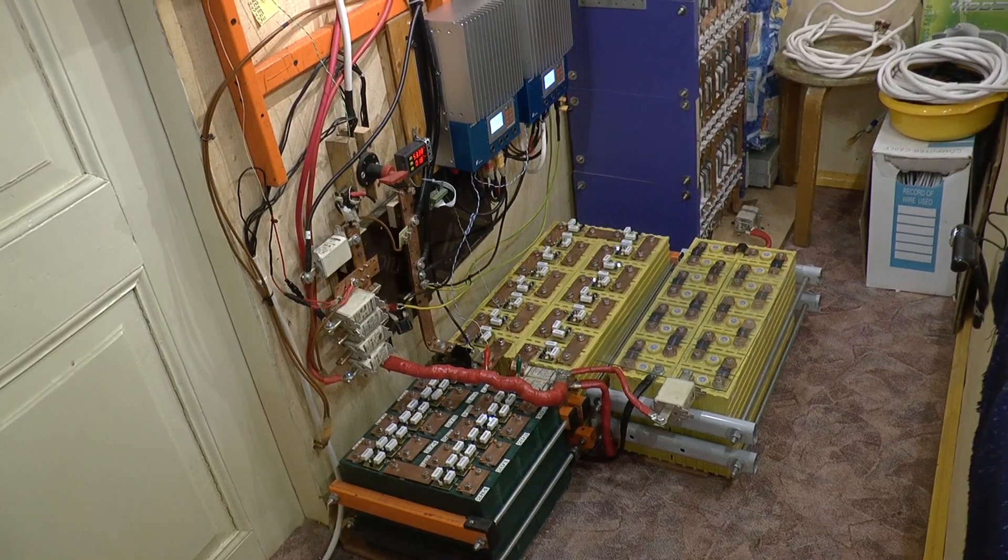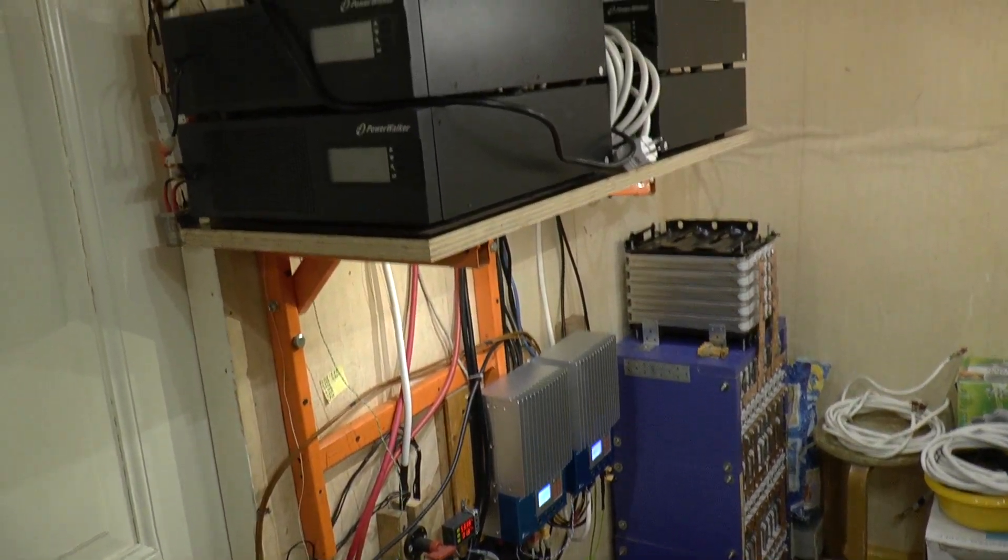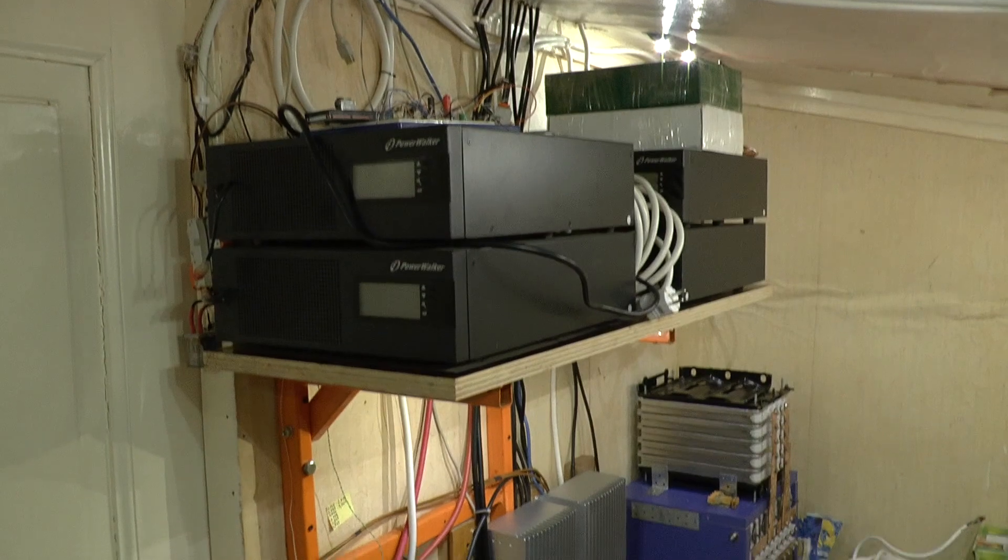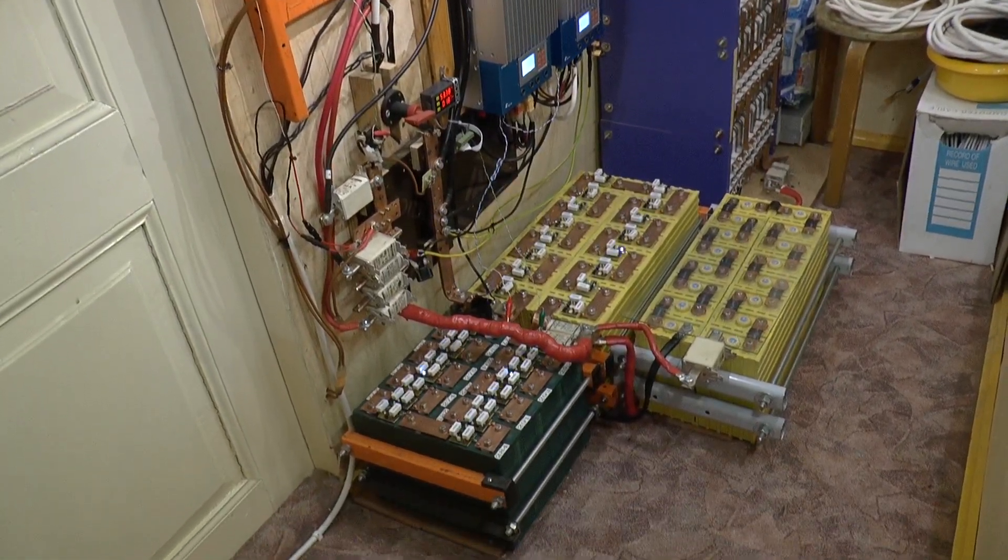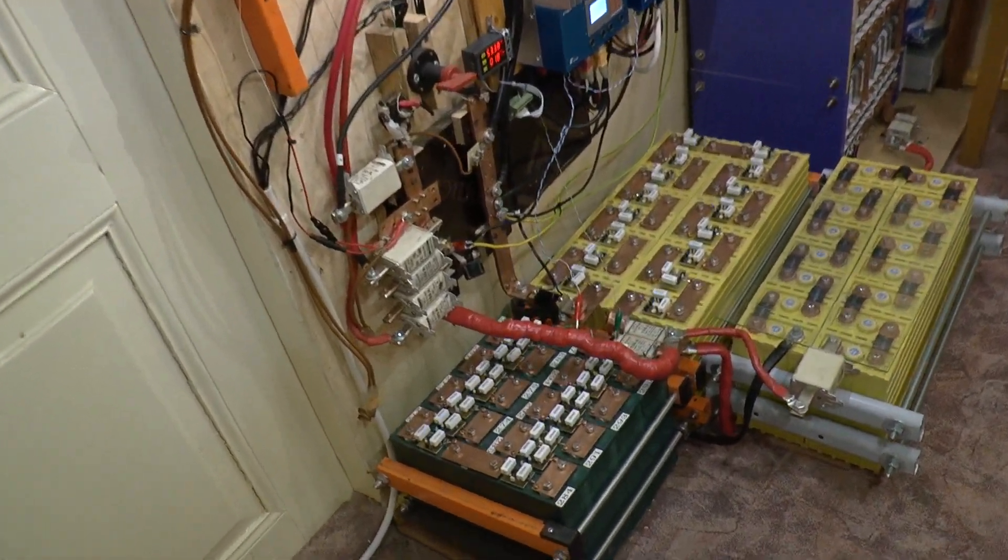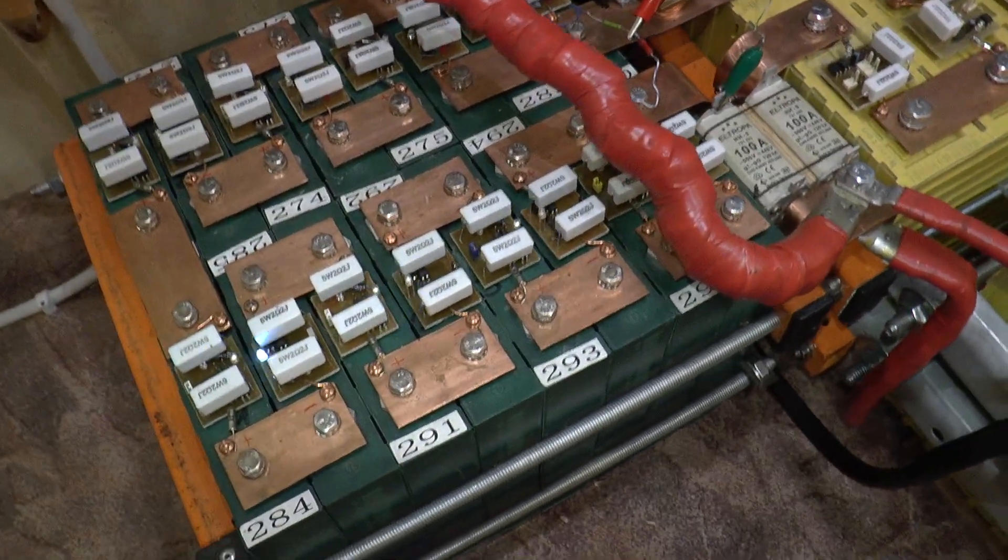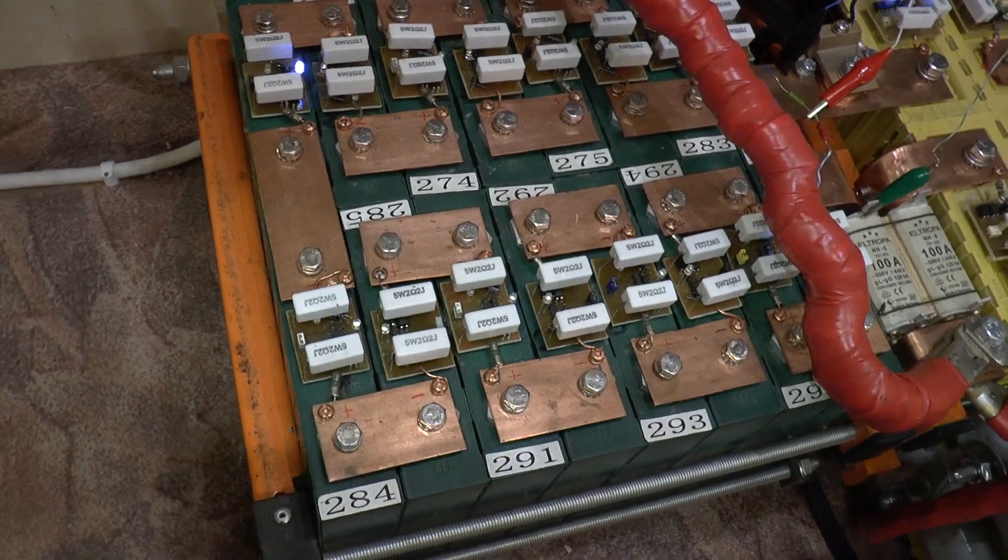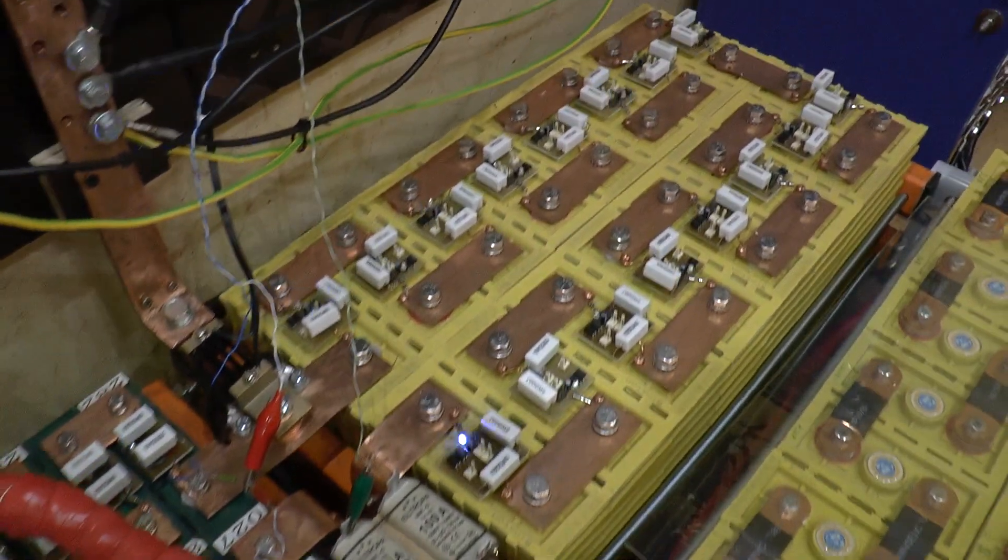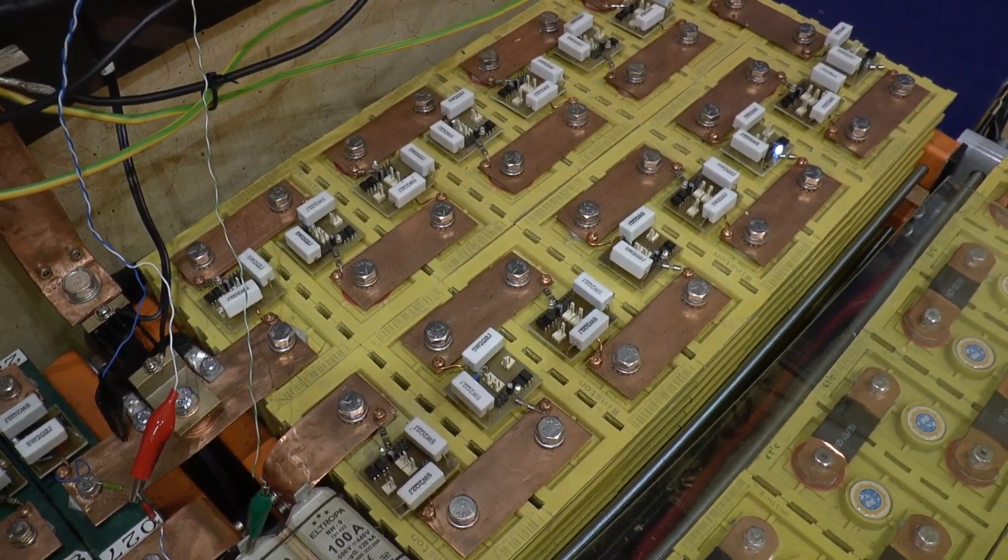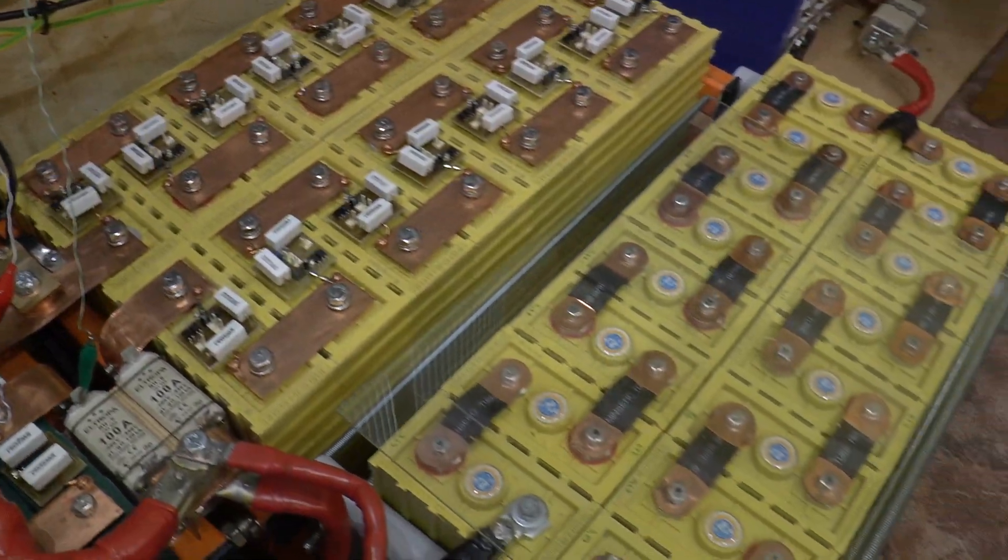So this is my battery setup right now. I have 30 kilowatt hours total usable. This is a 60 amp hour pack, 3 kilowatt hours, and this is 4.5 kilowatt hours with 90 amp hour cells.